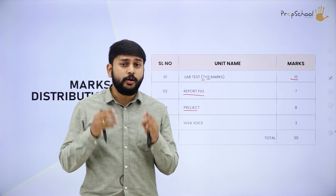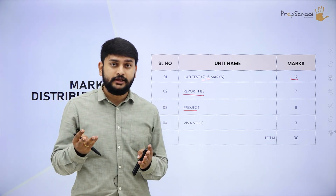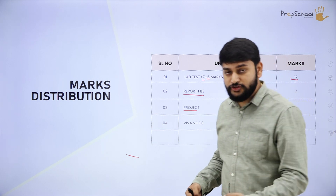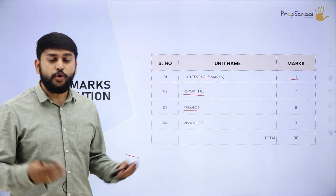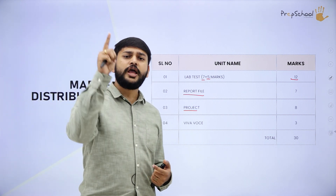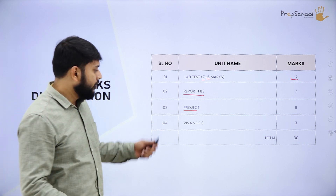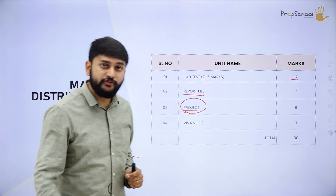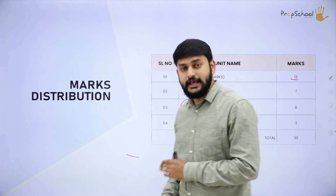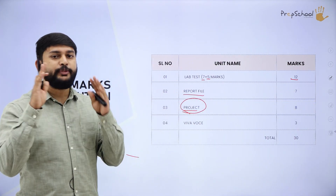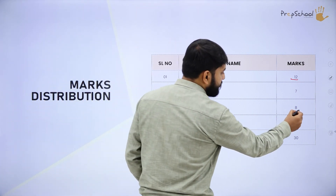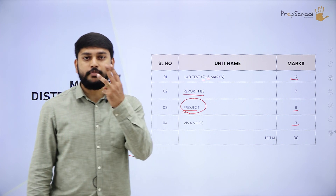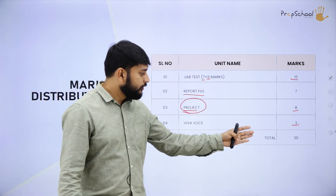The third component is the project, worth 8 marks — this is an interesting topic. You will have questions like how many people in the group, what topic to select, should you use functions, data structures, or file handling. I will make an exclusive video covering all project-related issues. Viva carries 3 marks. So in total you have 30 marks for practicals — and you can easily score all 30.